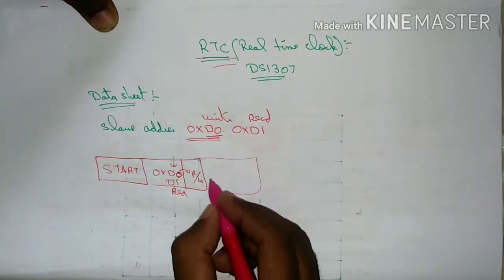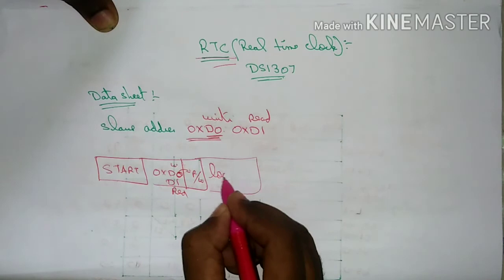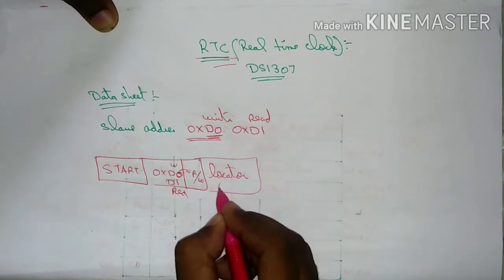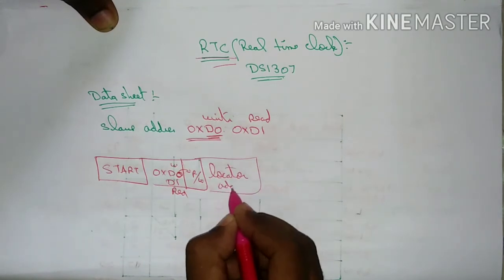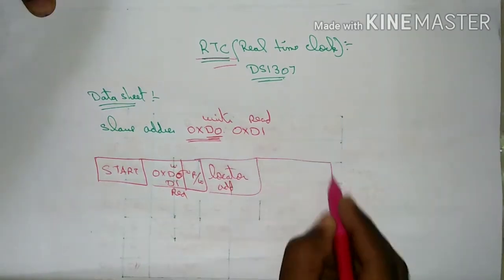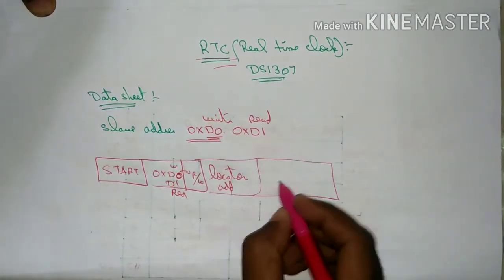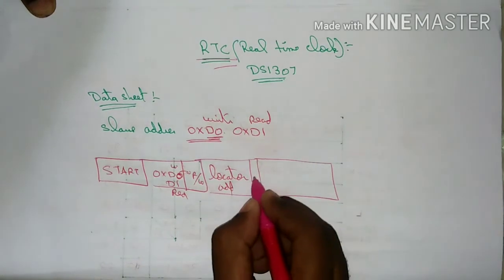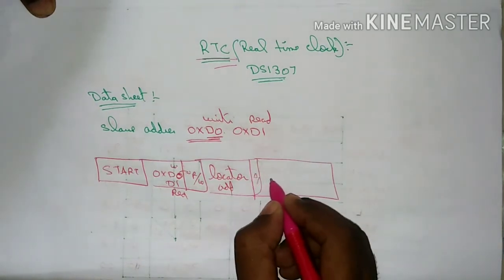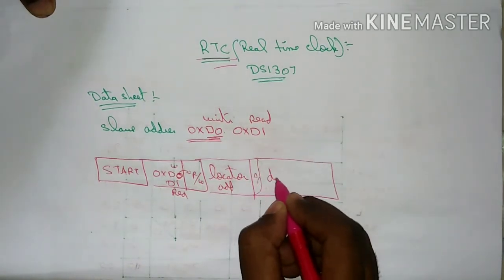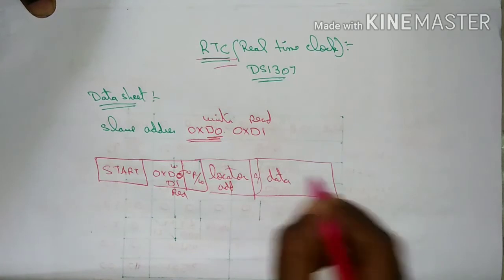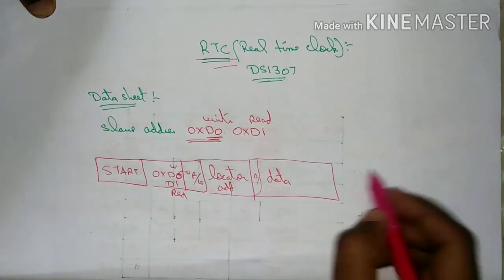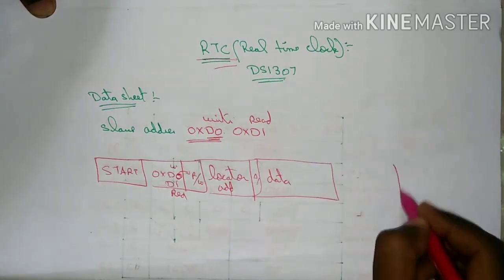The same location address: if we have a location address, we will have data. This is the data. If we have data, we will stop.